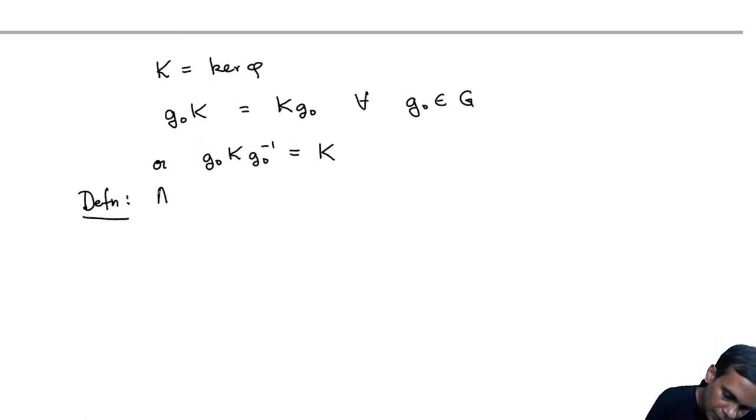This basically defines a normal subgroup. A subgroup H of G is said to be normal.